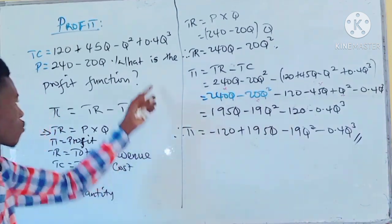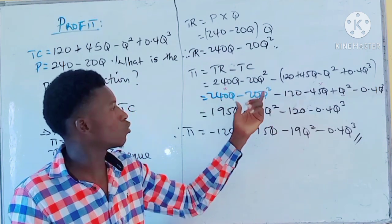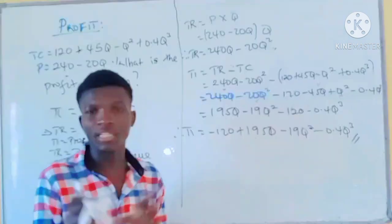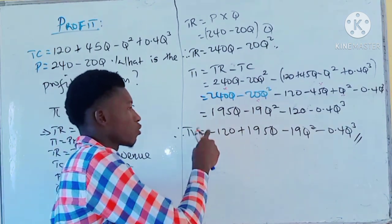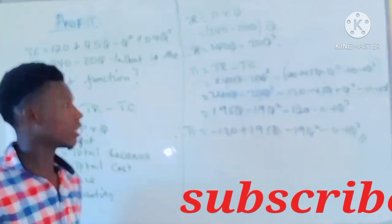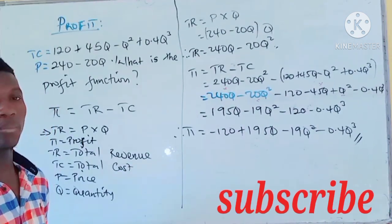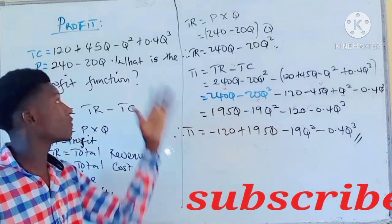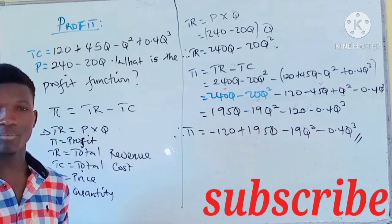This is how easily you can find the profit function. By finding your total revenue and total cost, you work them out, combine like terms of the same power, and that gives you your profit function in terms of Q — the profit expression. You can do more examples on this. This is how you find the profit function in business math and other courses. Thank you for watching. Please don't forget to subscribe and hit the notification bell so that whenever I post a new video on topics like this, you'll get notified. Thank you.